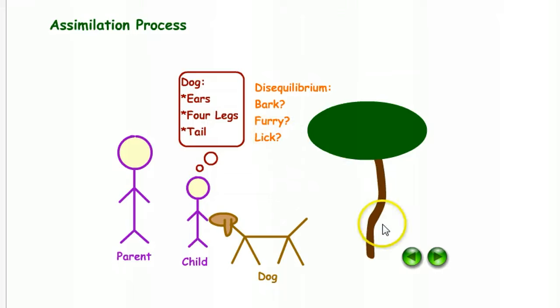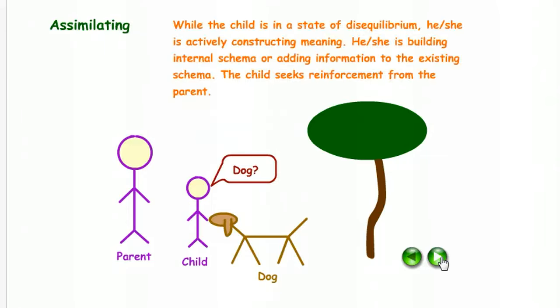Is it actually a dog or not? It does have the ears, the four legs, and a tail. So the child confers with the parent and says, dog. So while the child is in a state of disequilibrium, he or she is actively constructing meaning. He or she is building an internal schema or adding information to the existing schema. The child seeks reinforcement from the parent.